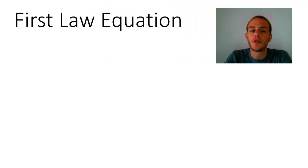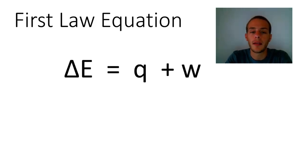Now let's talk about the first law equation. Now the first law equation has to do with two ways in which energy can flow between a system and its surroundings. And the equation looks like this, where we have ΔE equals q plus w.